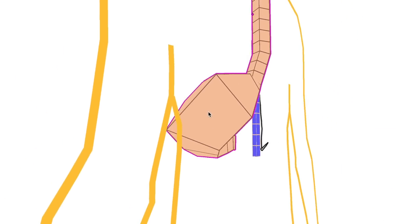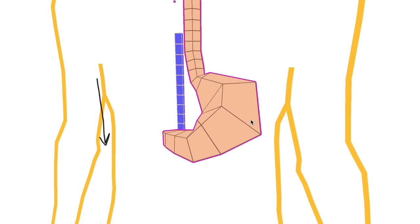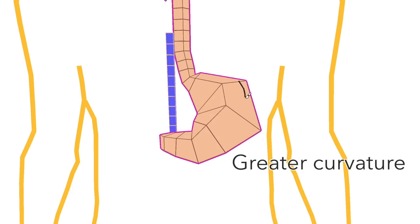The stomach is roughly J-shaped, and as you can see, leans back on a slightly oblique angle. It's said to have a greater curvature here and a lesser curvature here.